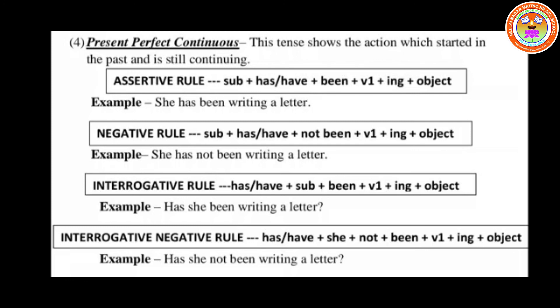For the negative rule: Subject + has/have + not + been + V1 in ING form + object. Example: 'She has not been writing a letter.' For the interrogative rule: Has/Have + Subject + been + V1 in ING form + object. Example: 'Has she been writing a letter?' For the interrogative negative: Has/Have + Subject + not + been + V1 in ING form + object. Example: 'Has she not been writing a letter?' These are the four formats for present tense. We will continue with past tense and future tense in the next video.